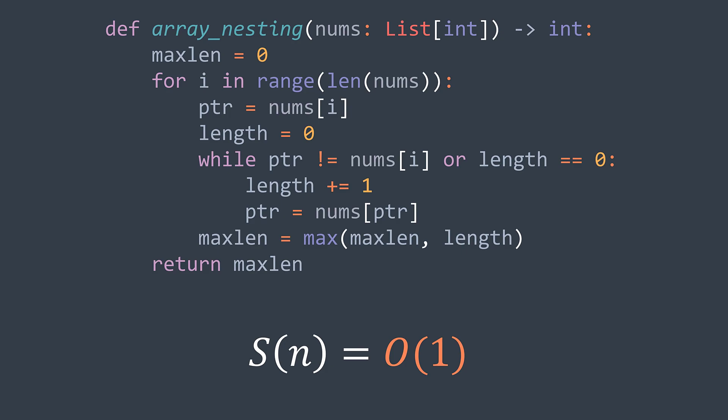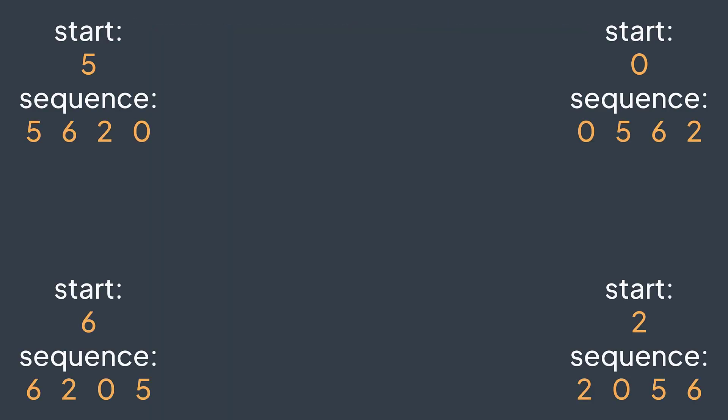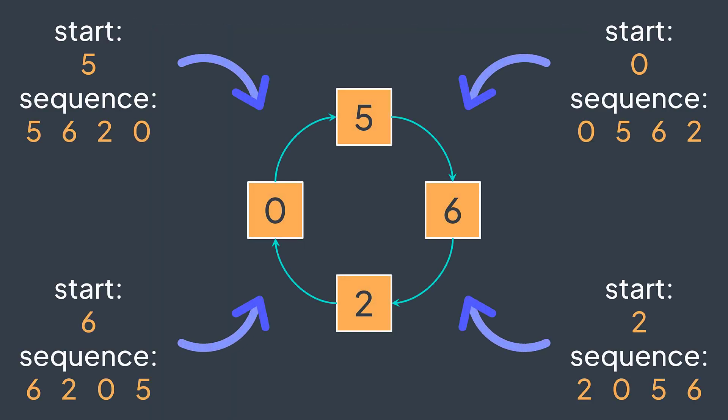If we have a look at the execution of the brute force solution on our example, we notice something interesting: elements of the same sequence always produce the same sequence, only the starting point changes. For example, with five, we got 5620. With zero, we got 0562. With six, we got 6205. And with two, we got 2056.